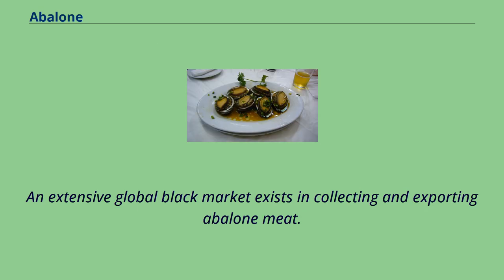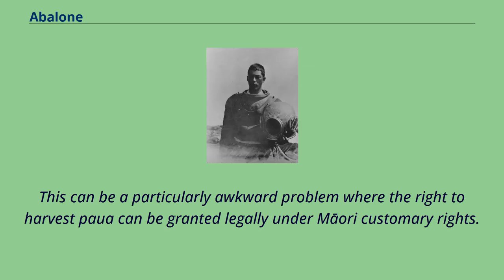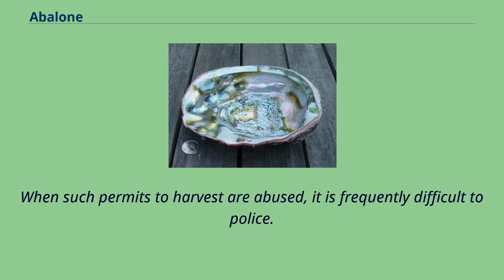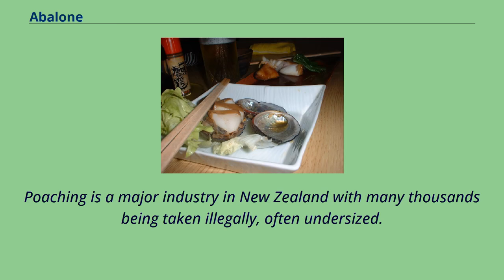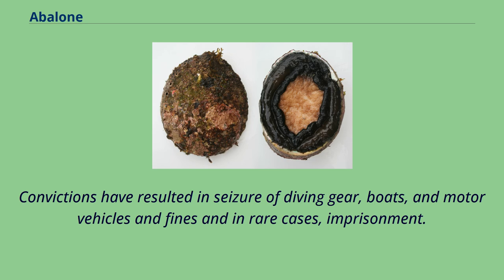An extensive global black market exists in collecting and exporting abalone meat. This can be a particularly awkward problem where the right to harvest Paua can be granted legally under Maori customary rights. When such permits to harvest are abused, it is frequently difficult to police. The limit is strictly enforced by roving Ministry for Primary Industries fishery officers with the backing of the New Zealand police. Poaching is a major industry in New Zealand with many thousands being taken illegally, often undersized. Convictions have resulted in seizure of diving gear, boats, and motor vehicles, and fines and, in rare cases, imprisonment.